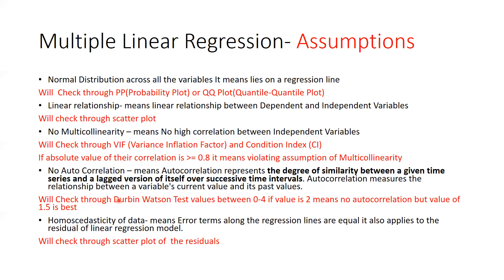Then we come to autocorrelation. In multicollinearity we were talking about correlation between independent variables, but here we are talking about time series data. Within that particular variable there is similarity. Autocorrelation represents the degree of similarity between a given time series and a lagged version of itself over successive time intervals.